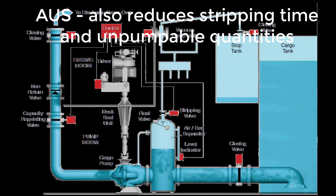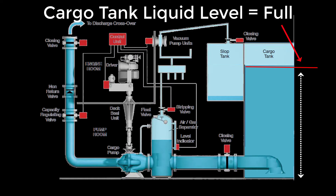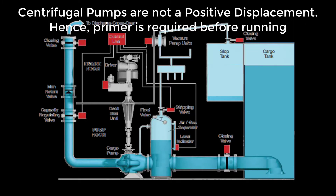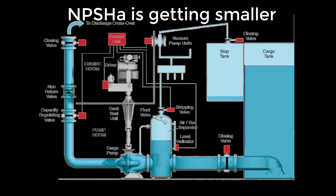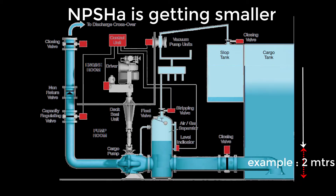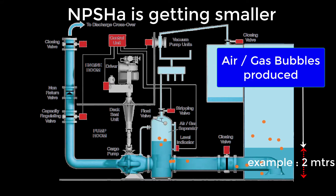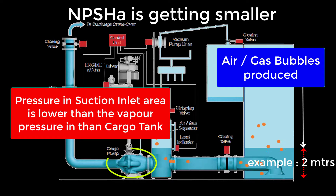Let me show you this animation. When the tank is full, the cargo pumps are basically happy — weight and gravity plus the pipe in full, and so are the cargo pumps. Note that centrifugal pumps are not a positive displacement type, hence a primer is required to run them. As the liquid level goes down — say about 2 meters as shown in this animation — the net positive suction head available is getting lower, and with such a level, bubbles or gases or air are produced. This condition is created due to lower pressure in the suction inlet area of the pumps versus the vapor pressure within the cargo tanks.